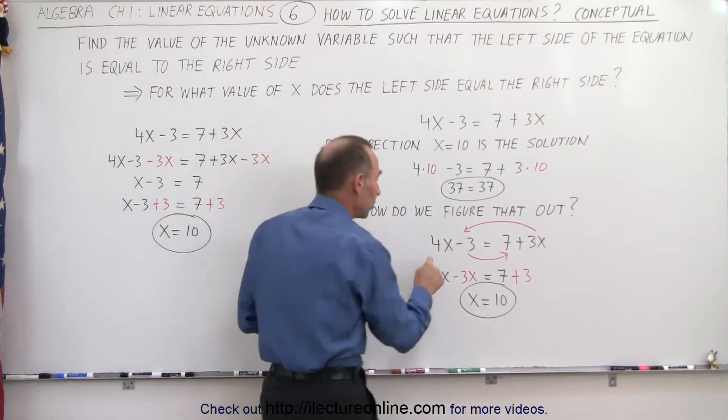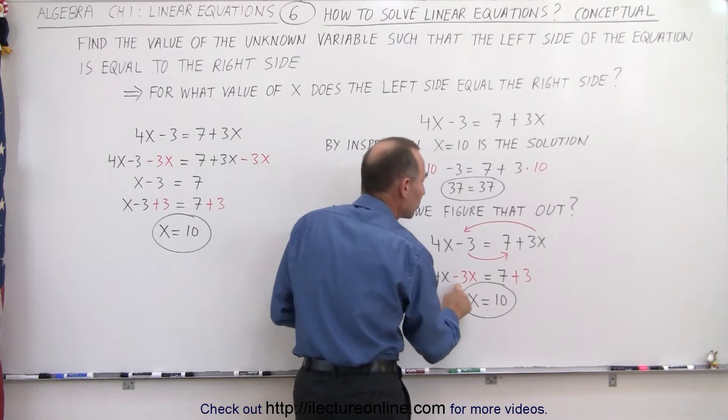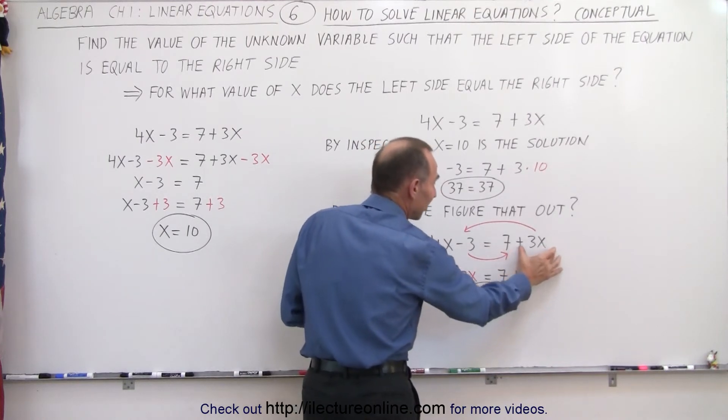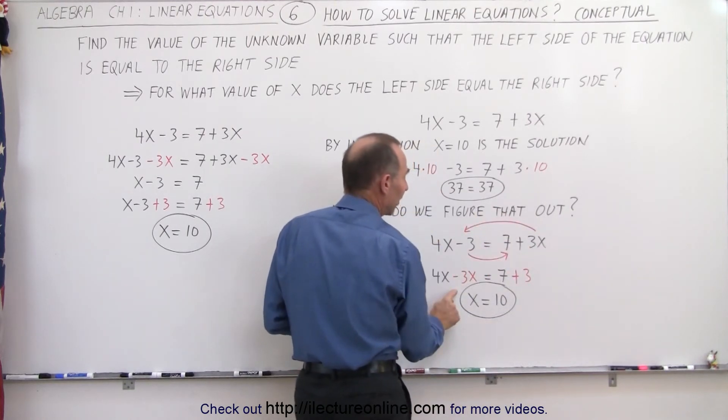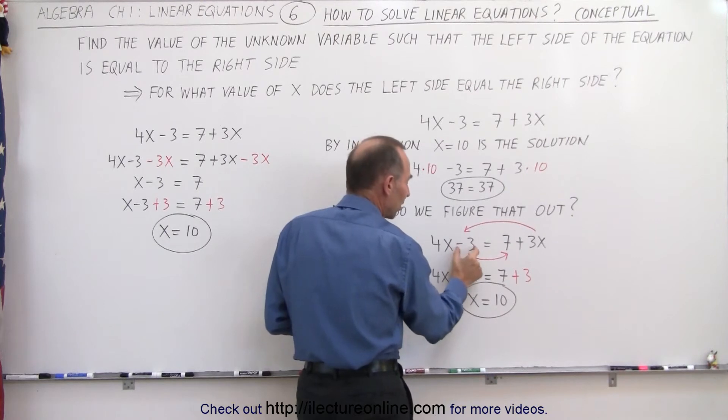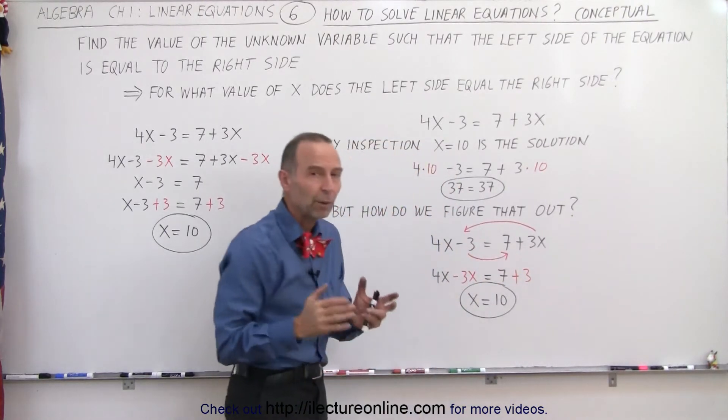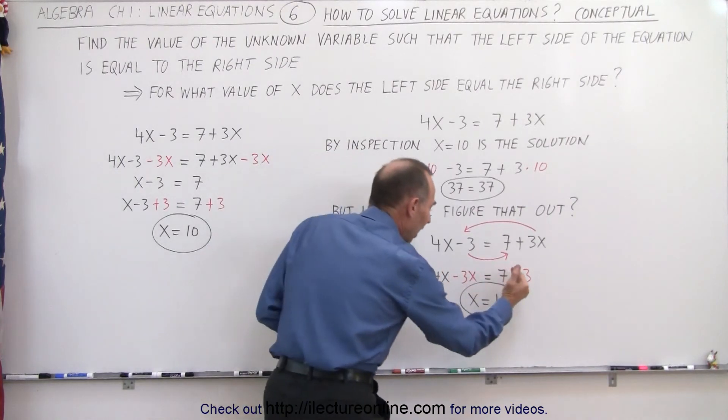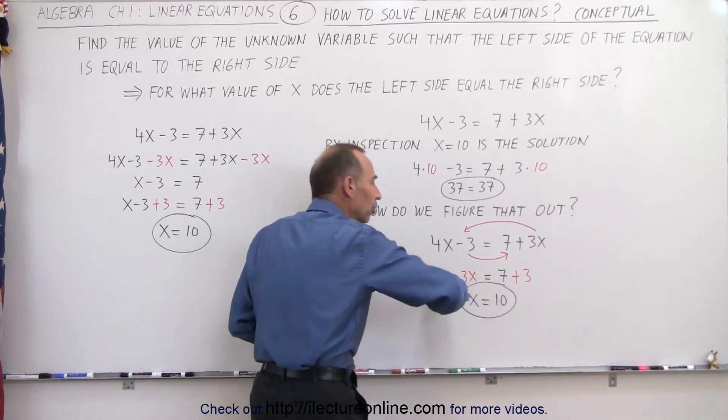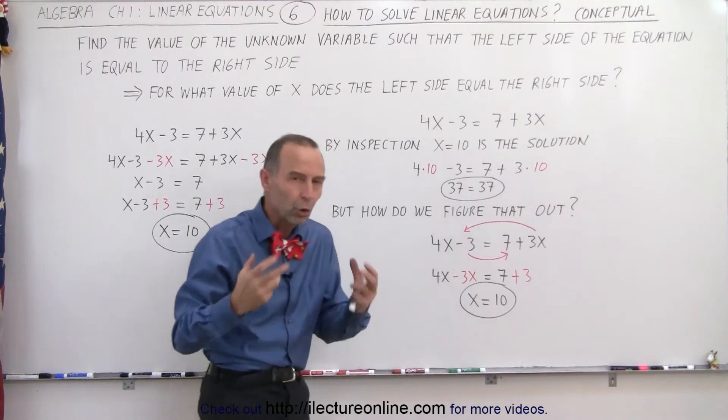So this becomes 4x minus 3x because the plus 3x on the right side becomes a minus 3x on the left side. We have a minus 3 on the left side. When we move that to the right side, it becomes a plus 3. When we do that, we have all the terms that have an x on one side and all the numbers on the other side, which is the goal.